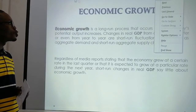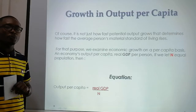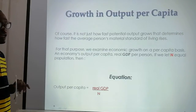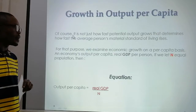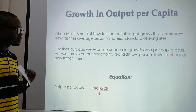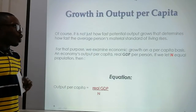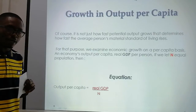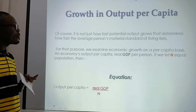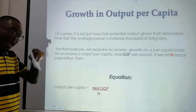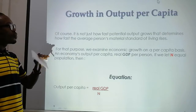Now we are moving to growth in output per capita. It is not just how fast potential output grows that determines how fast the average person's material standard of living rises. For that reason, we examine economic growth on a per capita basis — per head, per individual. Economic output per capita means real GDP per person.